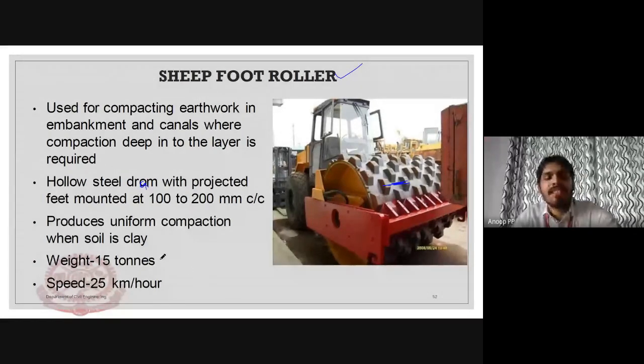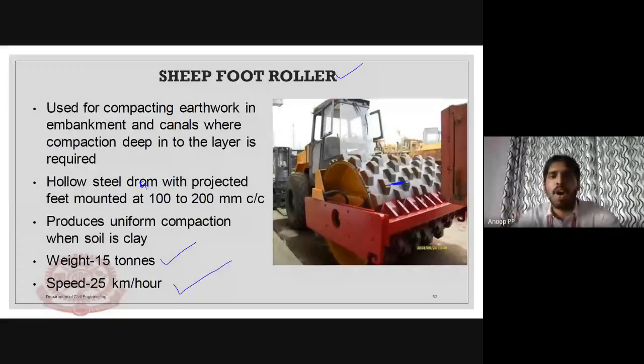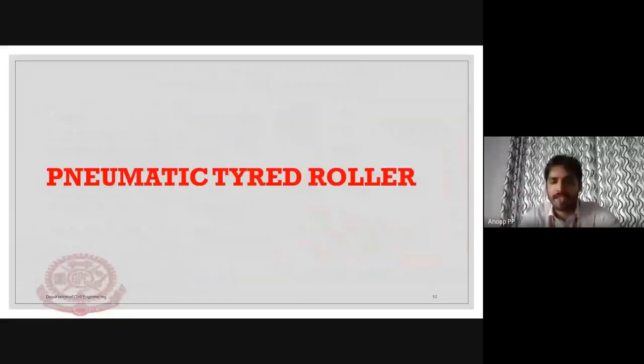The weight of the sheep foot roller is around 15 tons, and the speed of the roller can be up to 25 kilometers per hour.